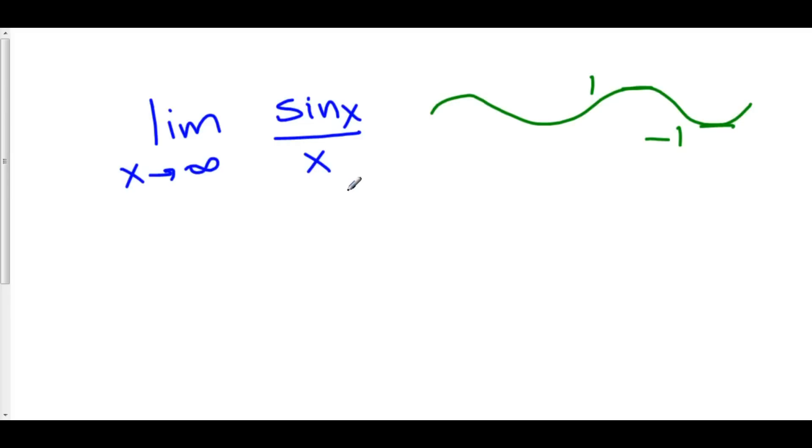x is going to be expanding to infinity very, very fast. In fact, our denominator is moving to infinity at a much faster rate than sine of x is. In fact, sine of x isn't even going to infinity. It's just bounded between 1 and negative 1.